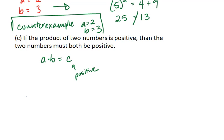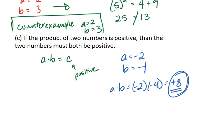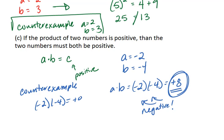The counterexample I thought of is when a is negative 2 and b is negative 4, a times b equals negative 2 times negative 4, which equals a positive 8. In this case, our product is positive, but both a and b are negative. Meaning our counterexample is that negative 2 times negative 4 equals a positive 8.